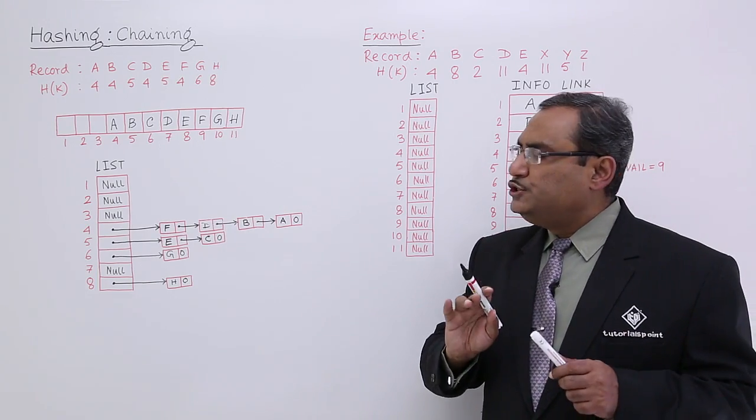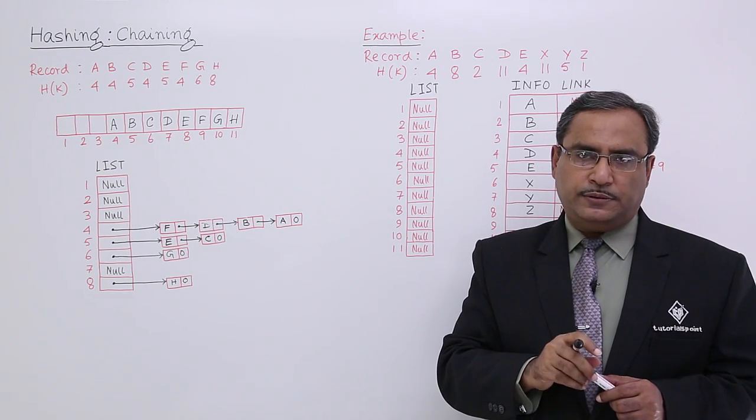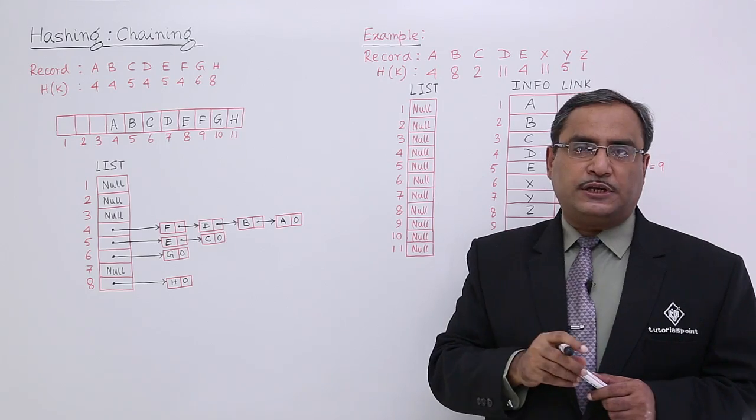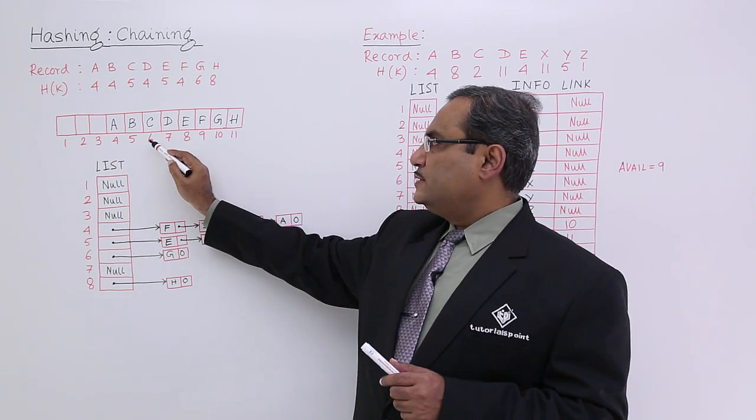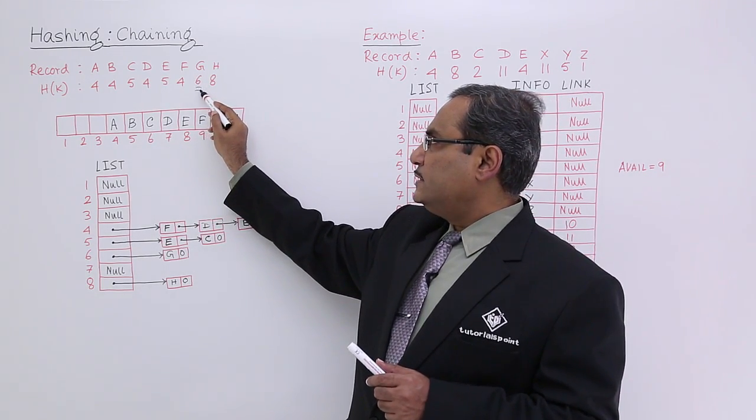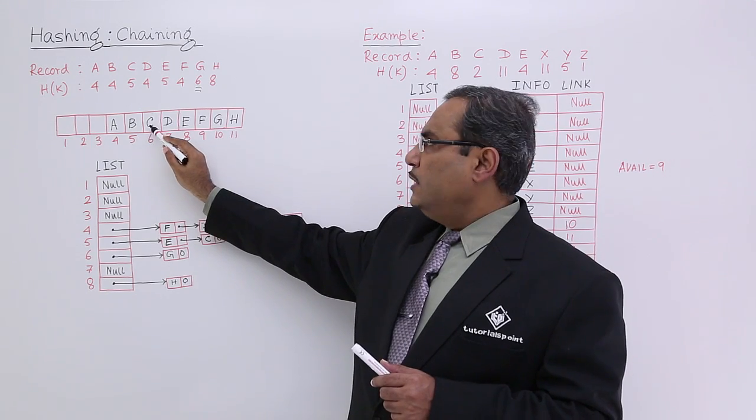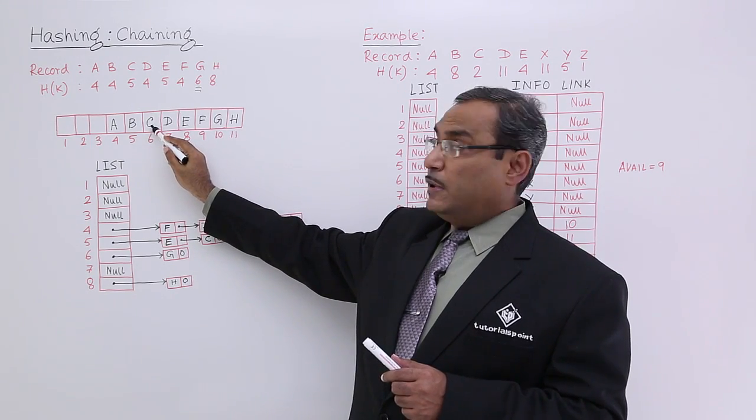Now let us search for G. I am expecting successful searching here. So I shall go to sixth location, because H of K is 6. I am going to the sixth location. It is not G. But C, C is having the H of K 5.